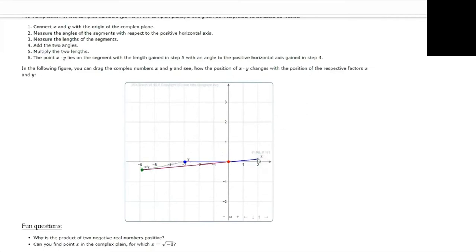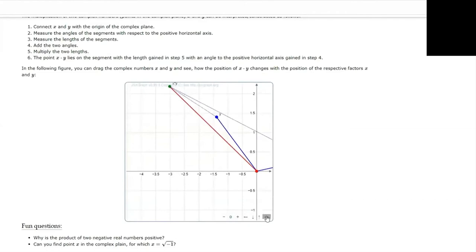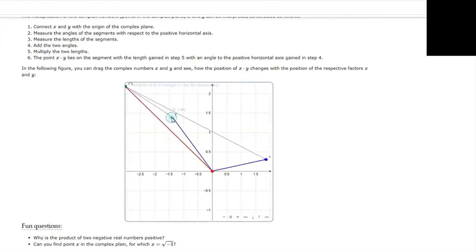Another interesting possibility is to let the students experiment with this JSXGraph widget and to find out which complex number has the property that if multiplied with itself, the product will be minus one. Here, again, the argument of minus one is 180 degrees. And thus, this complex number has to have a 90 degrees argument. So it is the half of 180.